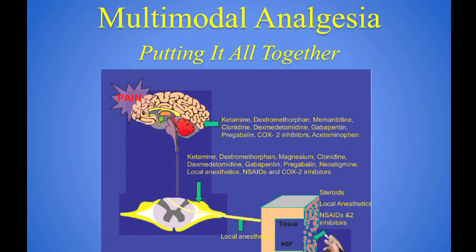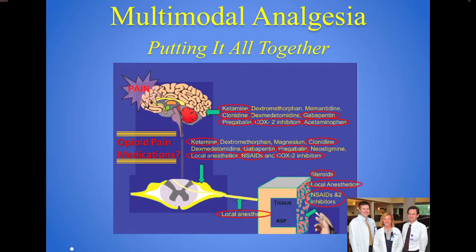Putting it all together: when you get the numbing medicines combined with Tylenol, NSAIDs, and neuropathic medications like Neurontin, we do other things as well. We give steroids to decrease inflammation and provide comfort, which also decreases nausea and vomiting. We use ketamine, a neuromodulator that helps prevent chronic pain. The biggest goal is not only comfort during surgery, but preventing the tissue irritation that can cause pain for weeks or months afterward — so we give medications to keep you comfortable both now and long term.